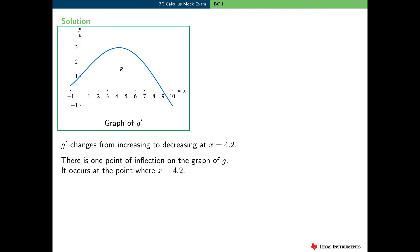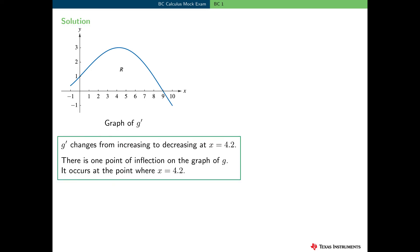For x between minus 1 and 10, there's only one place where the graph of g prime changes from increasing to decreasing or vice versa, and that's at x equal 4.2. We know there is a horizontal tangent there, so g double prime of 4.2 is equal to 0, and g prime is increasing to the left of x equal 4.2, meaning g double prime of x is greater than 0 there. So there's only one point of inflection on the graph of g, occurring at x equal 4.2, because the graph of g prime changes from increasing to decreasing there.